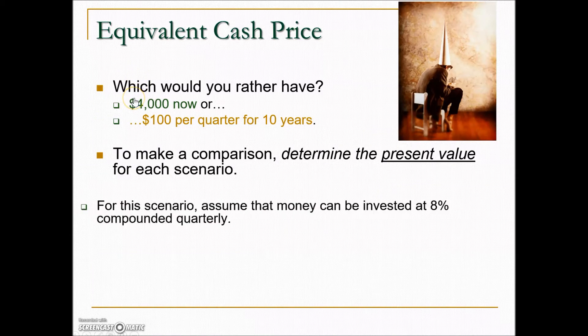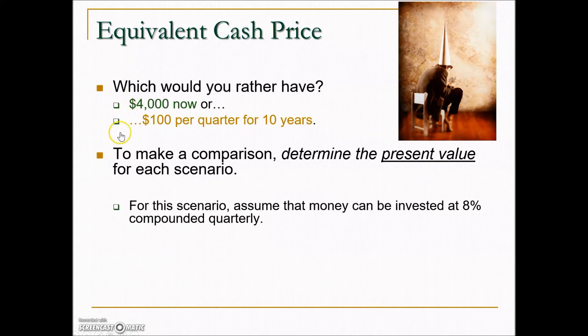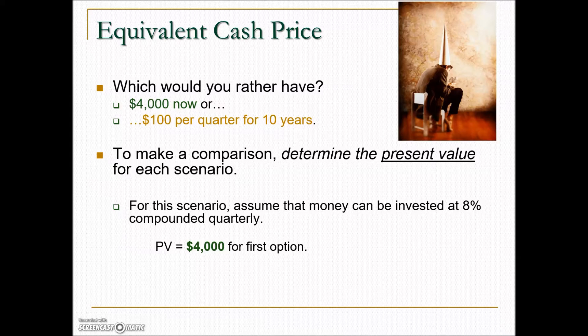The $4,000 is straightforward — there's no question it is $4,000. We need to calculate what the $100 per quarter growing for 10 years is equivalent to today. To do this we need an interest rate, and they're giving us 8% compounded quarterly. The present value of the $4,000 is $4,000 — no calculation needed.